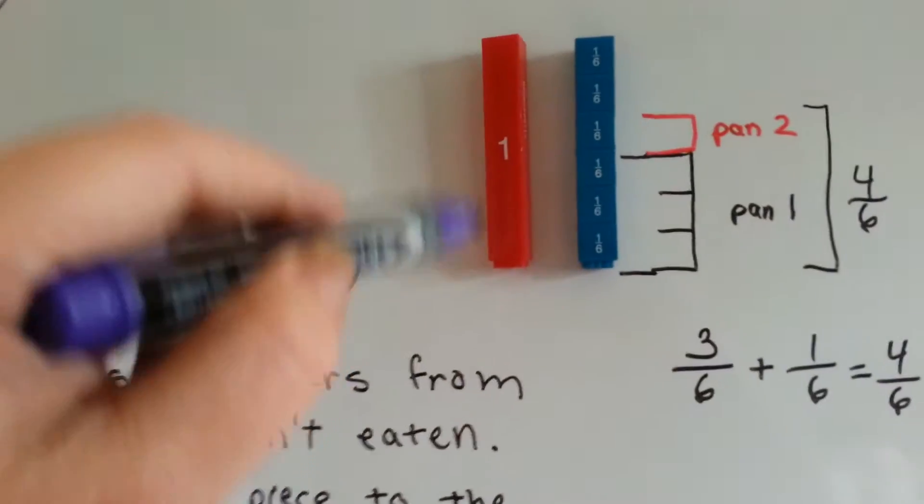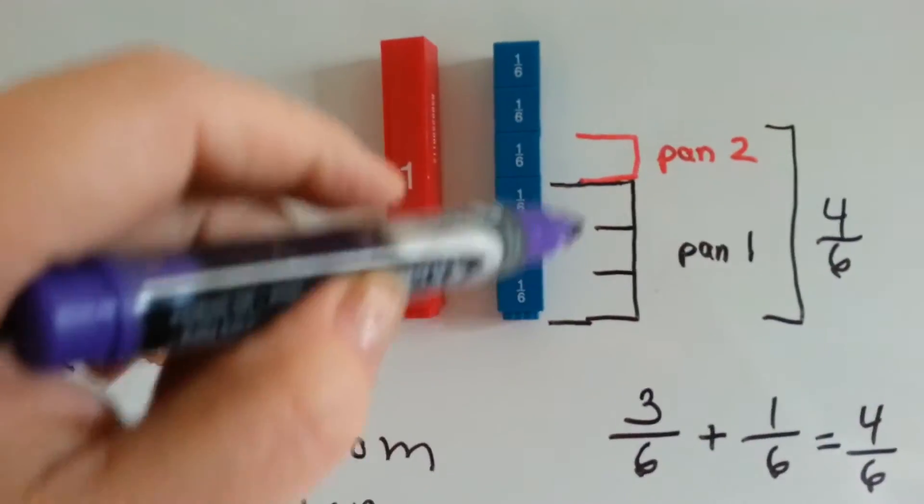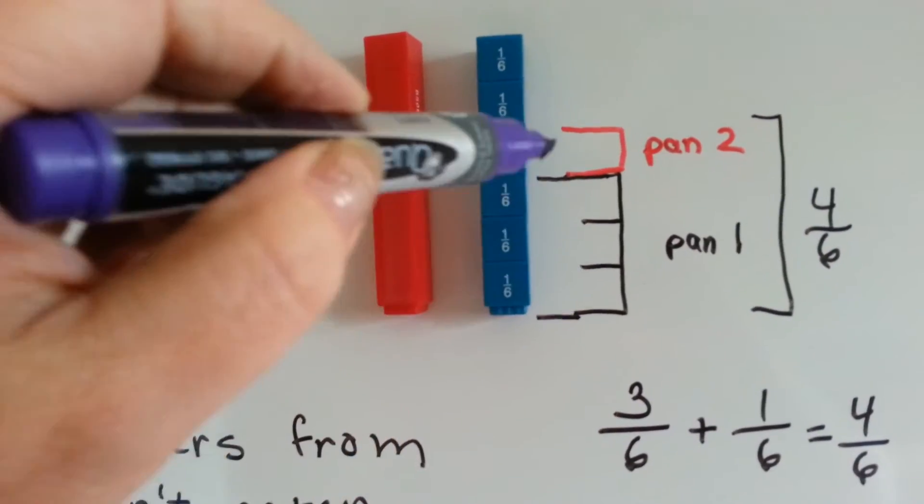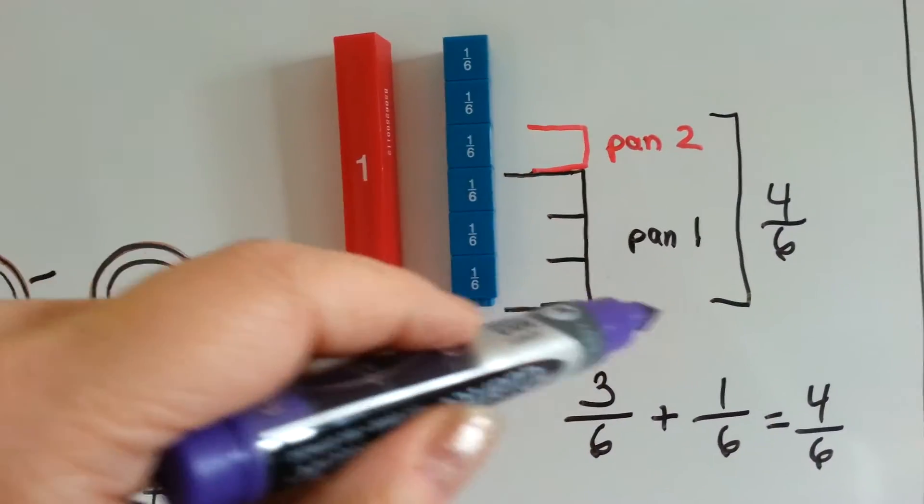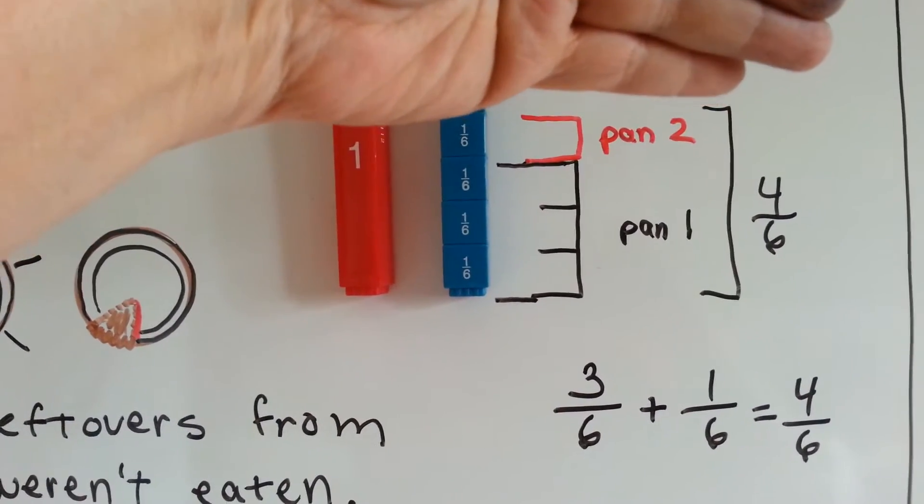Here's the 1 whole, and here's a bar cut into 6. Here's 3, and 1 more. That's the first pan, that's the second pan. It gives us 4 sixths.